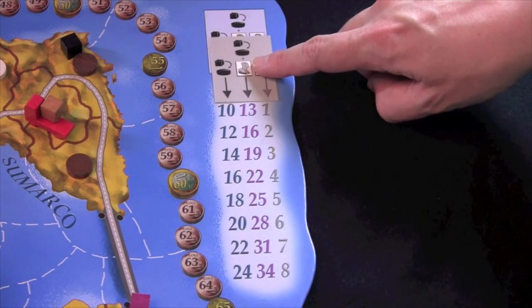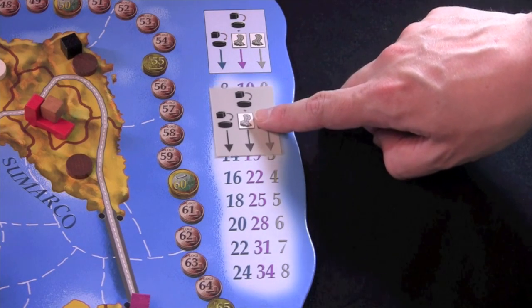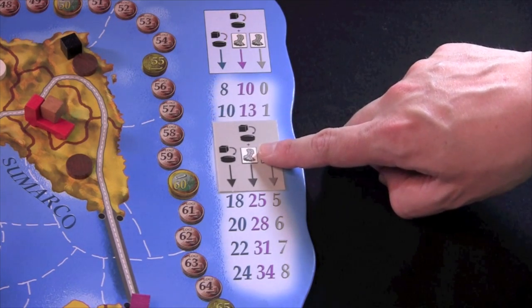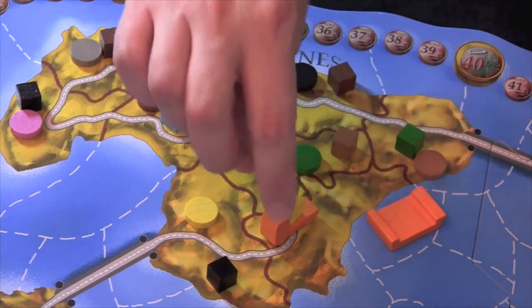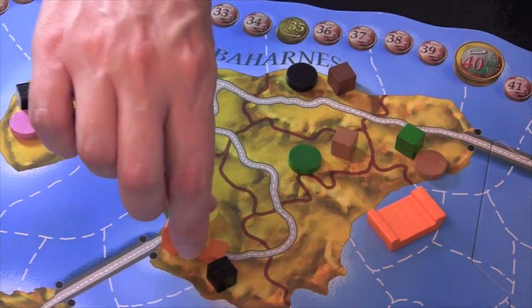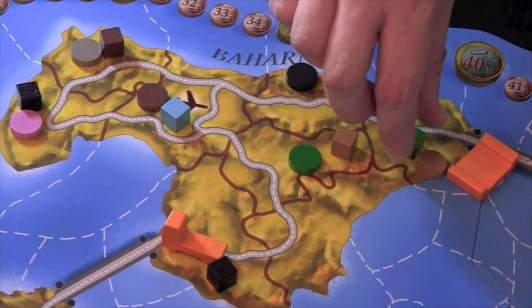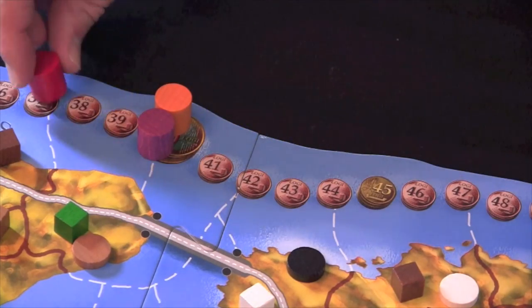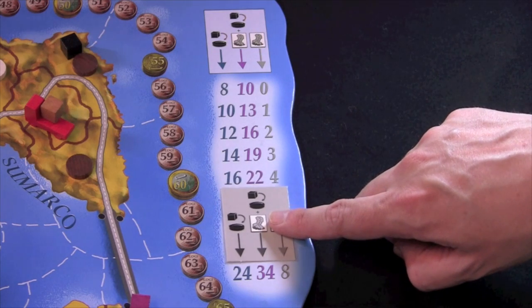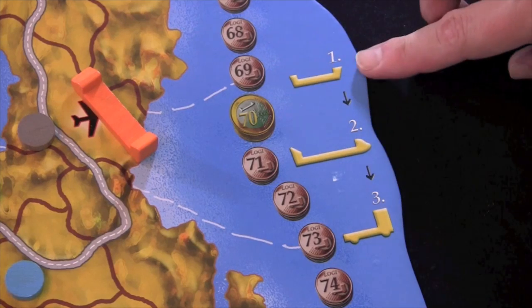These payouts will increase each round, so deliveries later in the game will be more lucrative, but harder to achieve. Each round, players must perform at least one action with their boat and truck, while the plane can stay put if desired. At the end of each round, players must pay three logi for each cube still on their vehicles. The payout indicator slides down one space, and a new round begins.